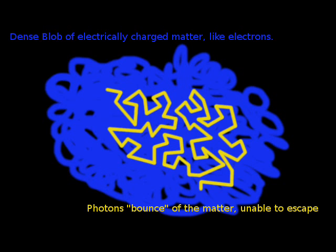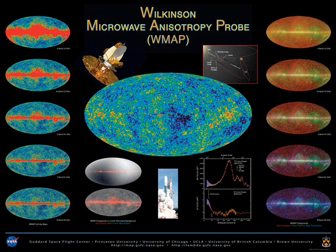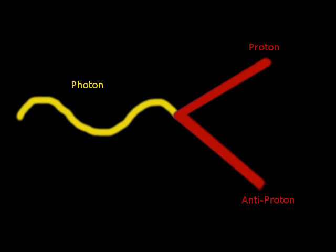This is why we use colliders, like the LHC, to see what happens at such high temperatures. The furthest back we can see in the universe is to the cosmic microwave background radiation. As we go further back, everything is closer together, and at a higher temperature, to the point where mean energy density is high enough to form protons and neutrons, at about 7 times 10 to the 12 Kelvin.